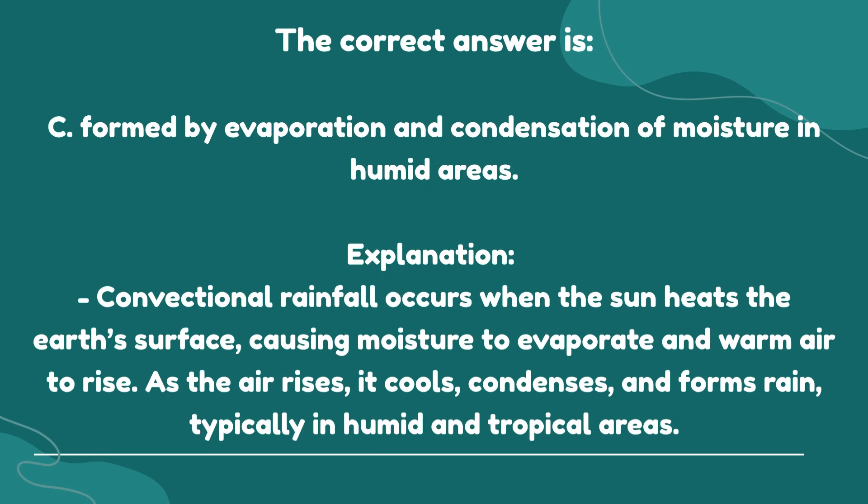The correct answer is C. Formed by evaporation and condensation of moisture in humid areas. Explanation: Convectional rainfall occurs when the sun heats the earth's surface, causing moisture to evaporate and warm air to rise. As the air rises, it cools, condenses, and forms rain, typically in humid and tropical areas.